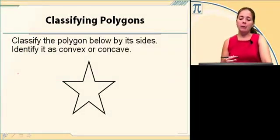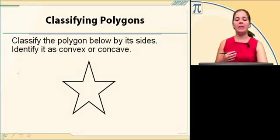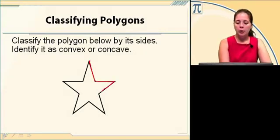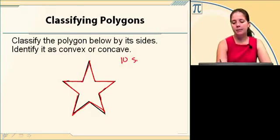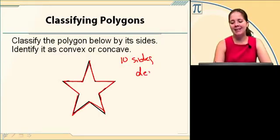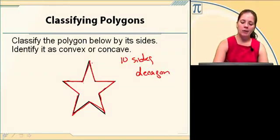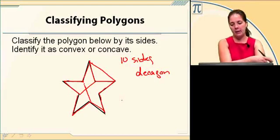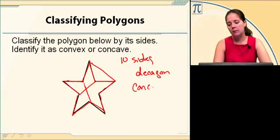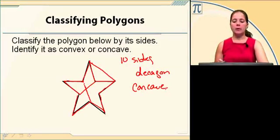We're going to classify the polygon by the number of sides, then identify it as convex or concave. This star here has one, two, three, four, five, six, seven, eight, nine, ten sides. If it has ten sides, that means it is a decagon. And since even though I have some diagonals on the inside, since at least part of one is on the outside, this is concave. So it's a concave decagon.